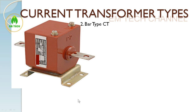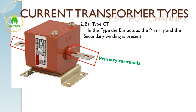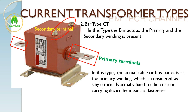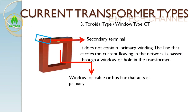Next is the bar type CT. In this type, there is a maximum of a single turn winding, and this bar is called the primary winding. It is directly connected to a bus bar or cable through bolting. These are the primary terminals and these are the secondary terminals. Unlike the wound type which may have multi-turn primary, the bar type has only a single turn for the primary winding, and the secondary terminal is visible above.